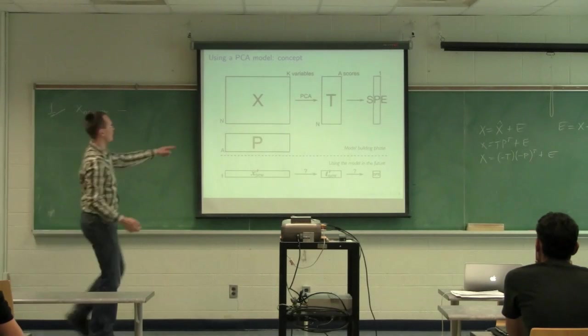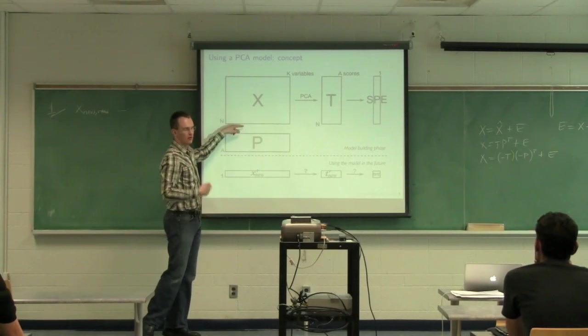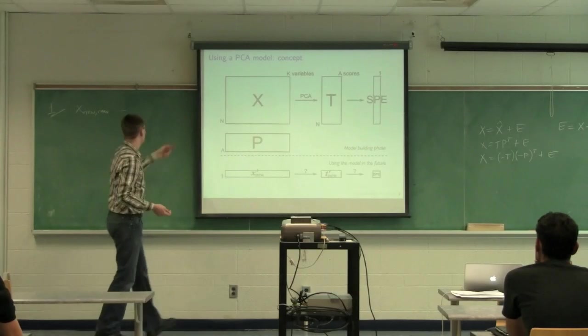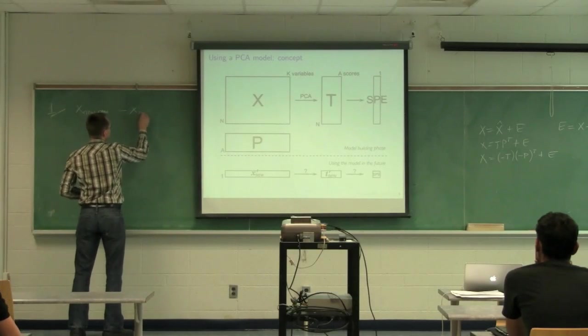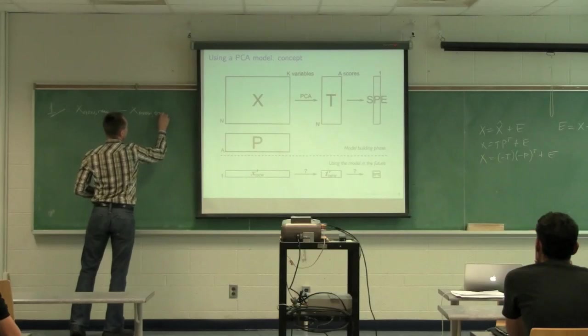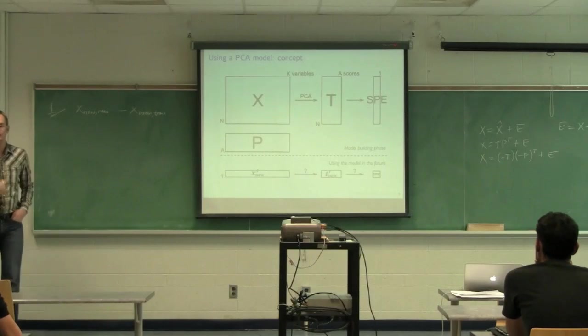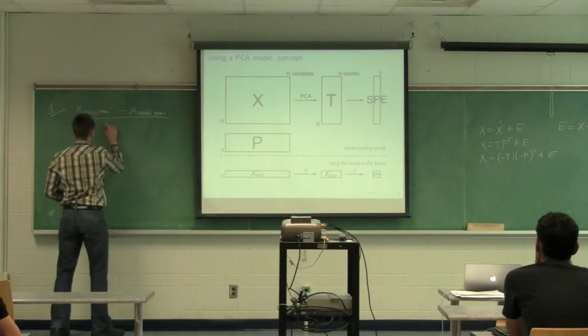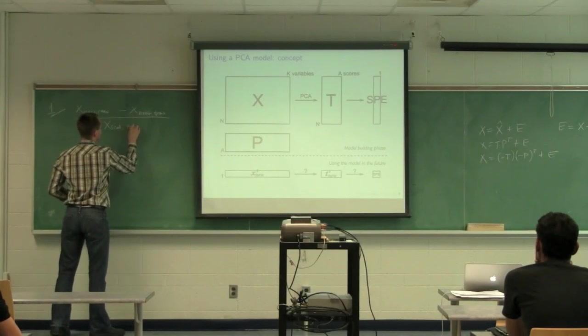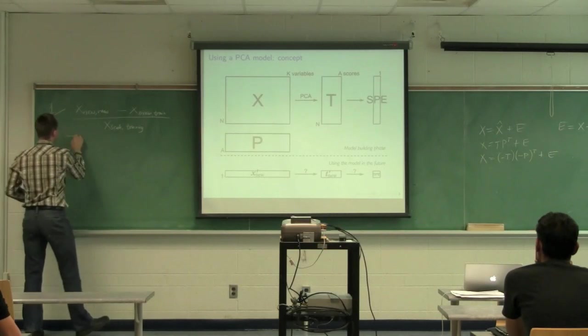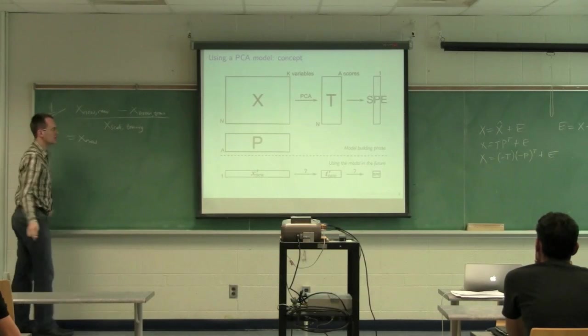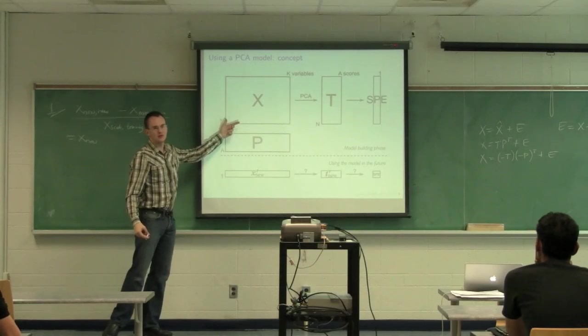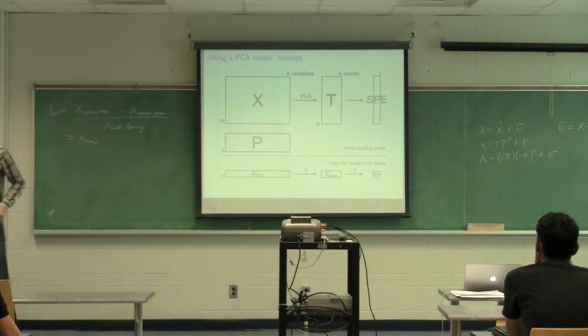Do we just use the mean of the training data set? Yeah, the training data set. So when we built our model originally, we have to also store somewhere that centering vector and that scaling vector that we used when we built that model. So we subtract from that x_mean_train to indicate that that's the mean vector from when we train the model, build the model, or from the model building phase. And we divide through by x_scale as well from the training data. That's equal to x_new. So this x_new over here is not the raw data. It's the centered and scaled data using the centering and scaling when we built the model originally. Is that clear?